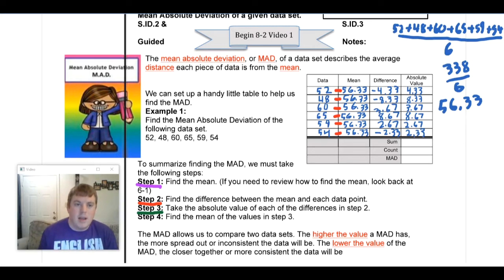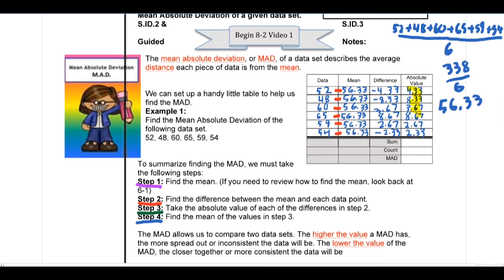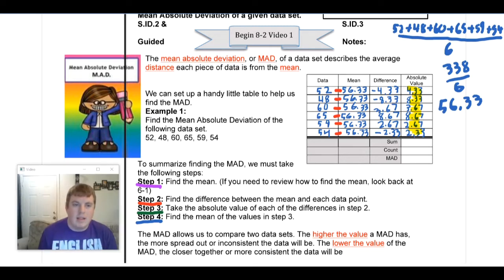Now, our last step is to find the mean of the values that we just found in step three, where we made them all positive. So what we're going to do is just add our column going down. We're going to add all these numbers together, and we're going to put that sum where it says 'sum'. When I add those all together, I got that my sum was 30. When I talk about count, that just means how many numbers I had. So we had one, two, three, four, five, six. So my count is going to be six. And I divide 30 by six, and that gives me a MAD of five.